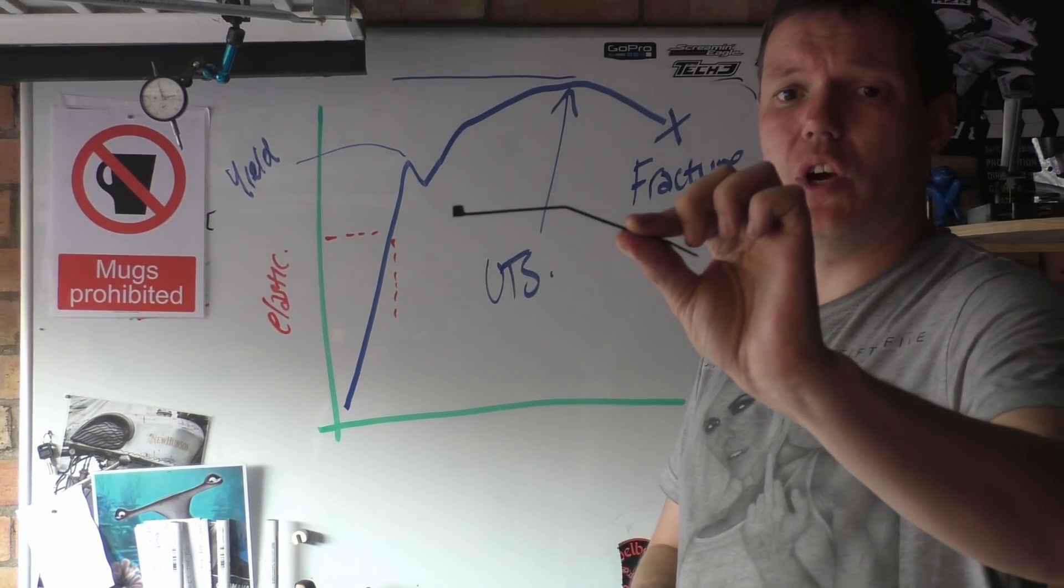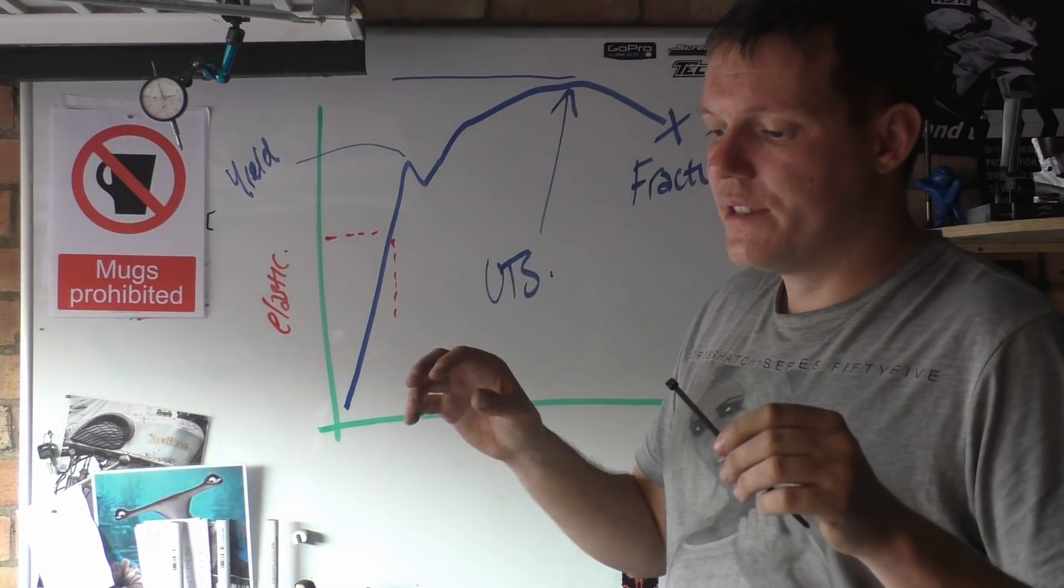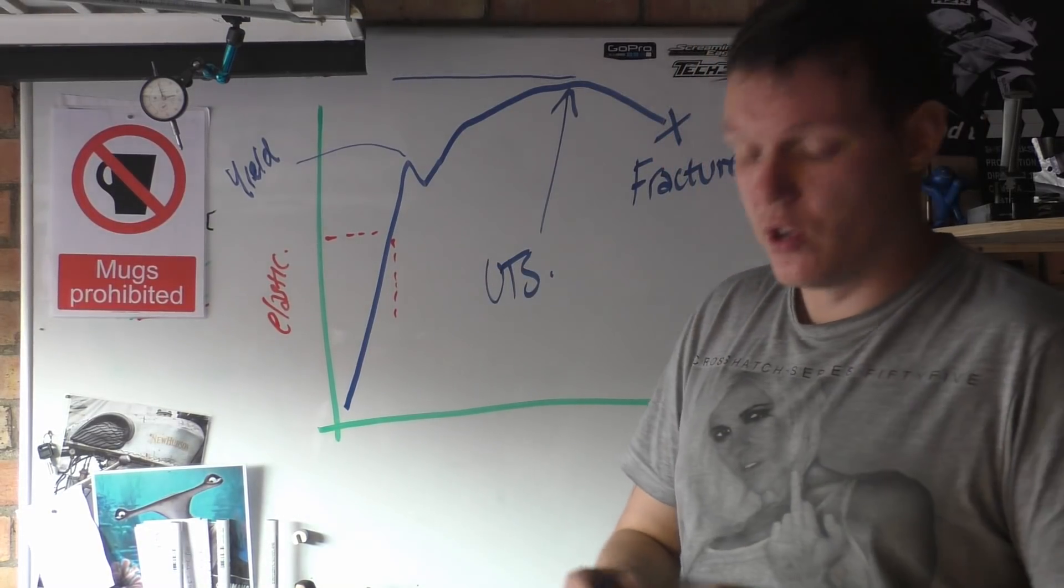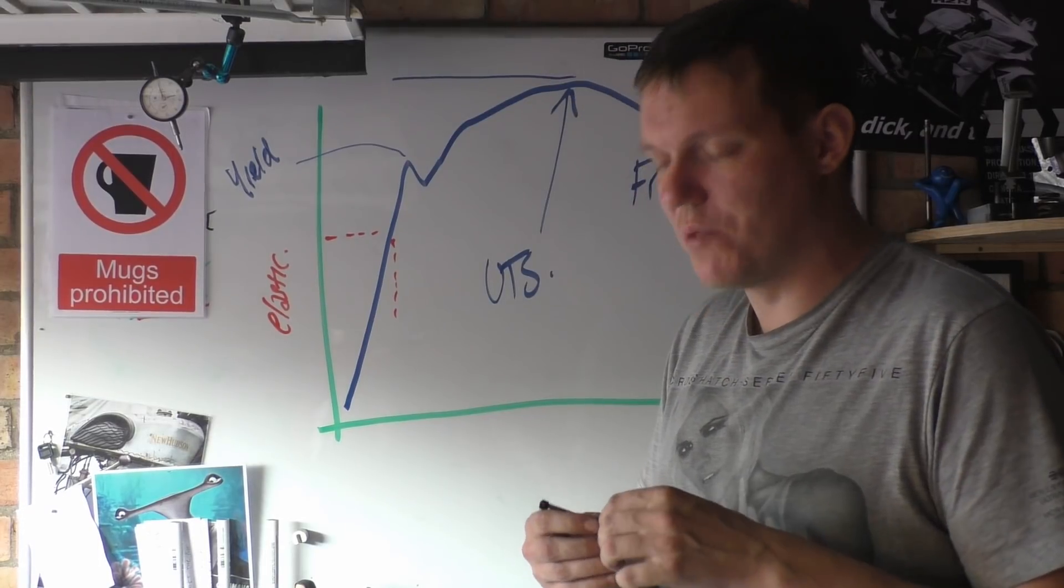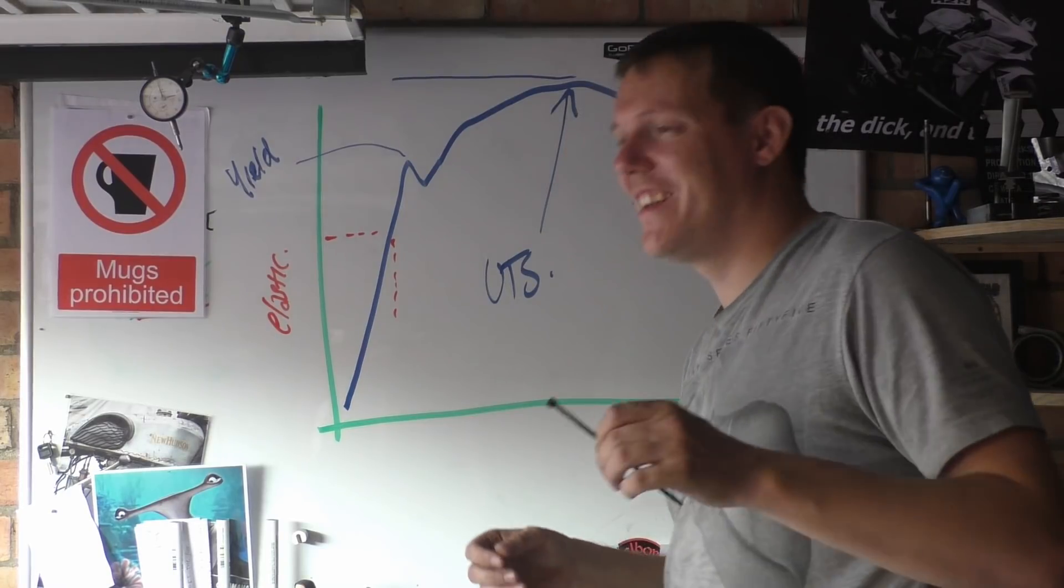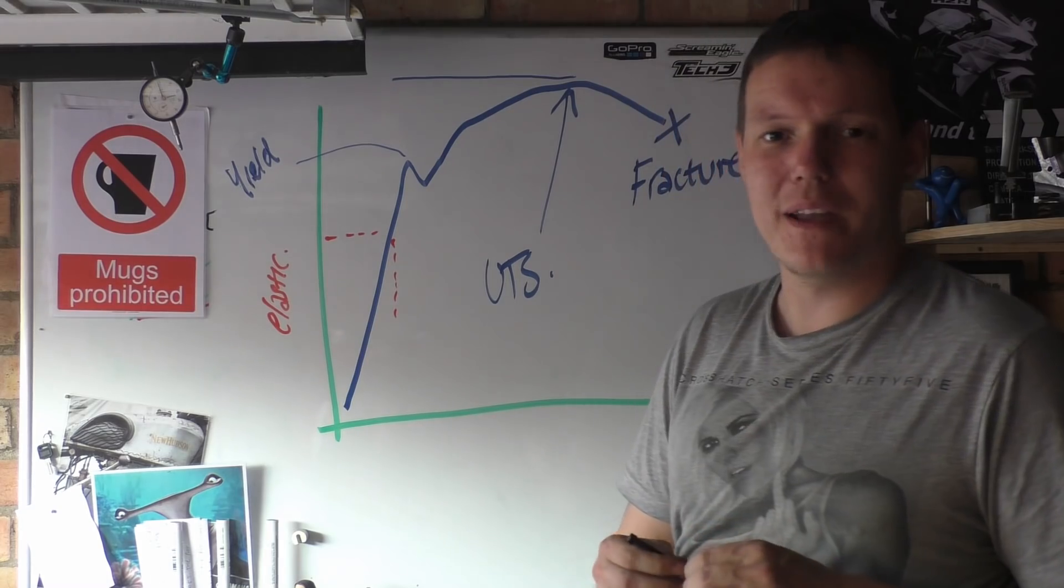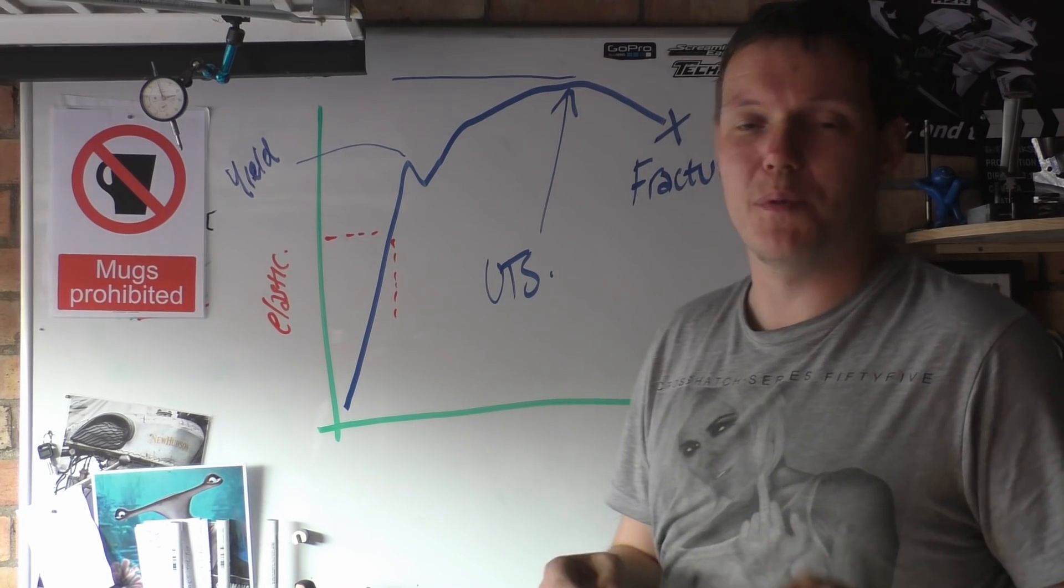And you'll notice when you try and straighten something that's yielded, it's a massive pain in the ass. You know what I mean? Trying to bend something back straight and get it perfect again the way it was—it's pretty much impossible.